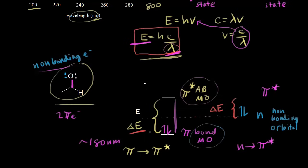So what happens to the wavelength? If we have a smaller energy difference, and energy and wavelength are inversely proportional, then this must correspond to a longer wavelength. This n to pi star transition corresponds to a wavelength of approximately 290 nanometers. This is an important concept: as you decrease the energy difference between your orbitals, you increase the wavelength of light absorbed. We'll talk much more about that in the next few videos, because that's where the idea of color comes in.